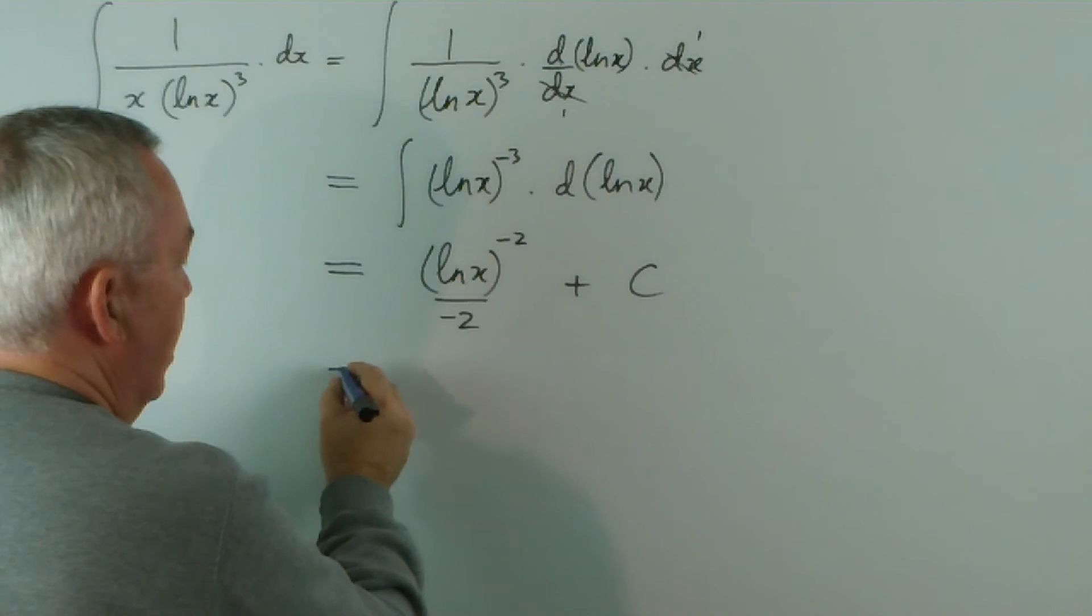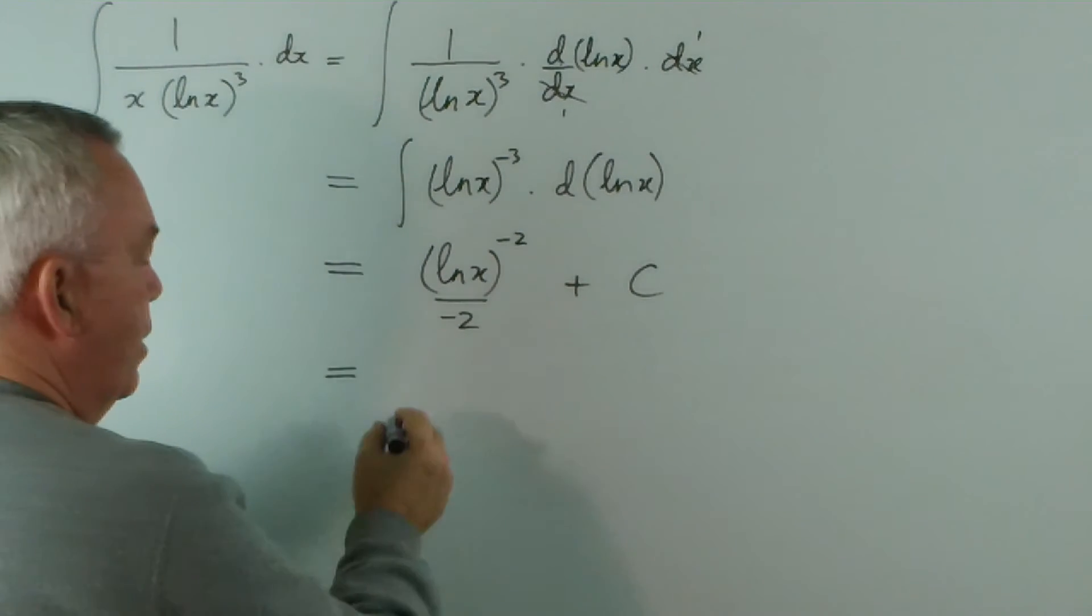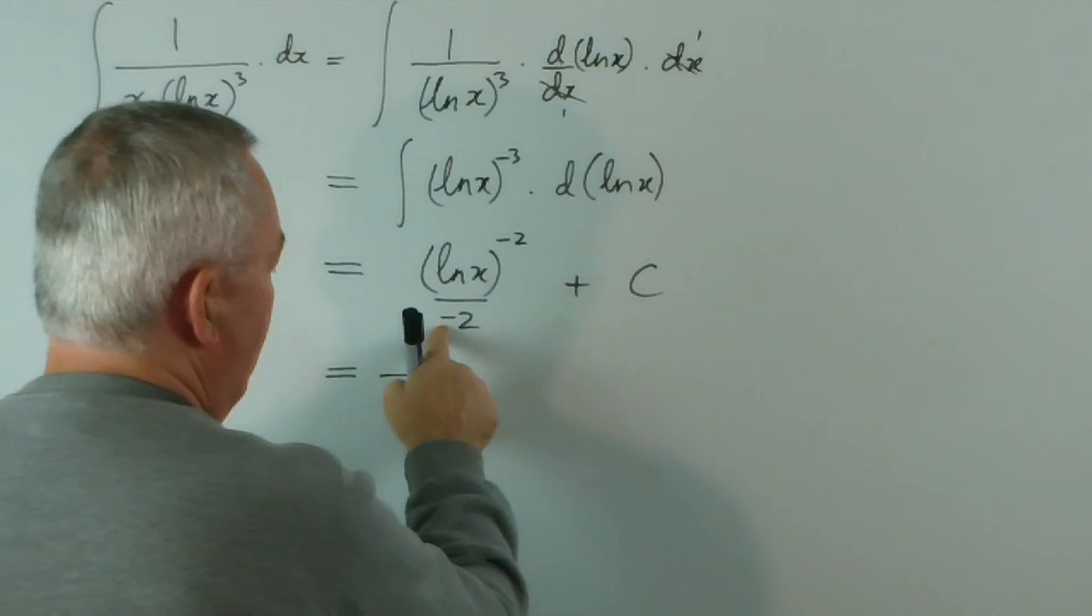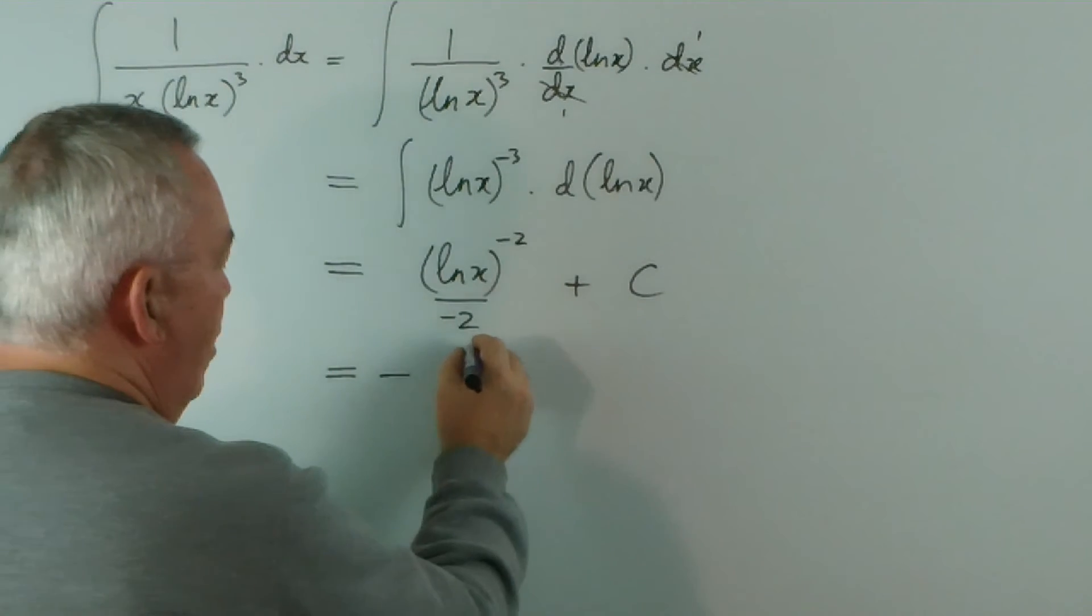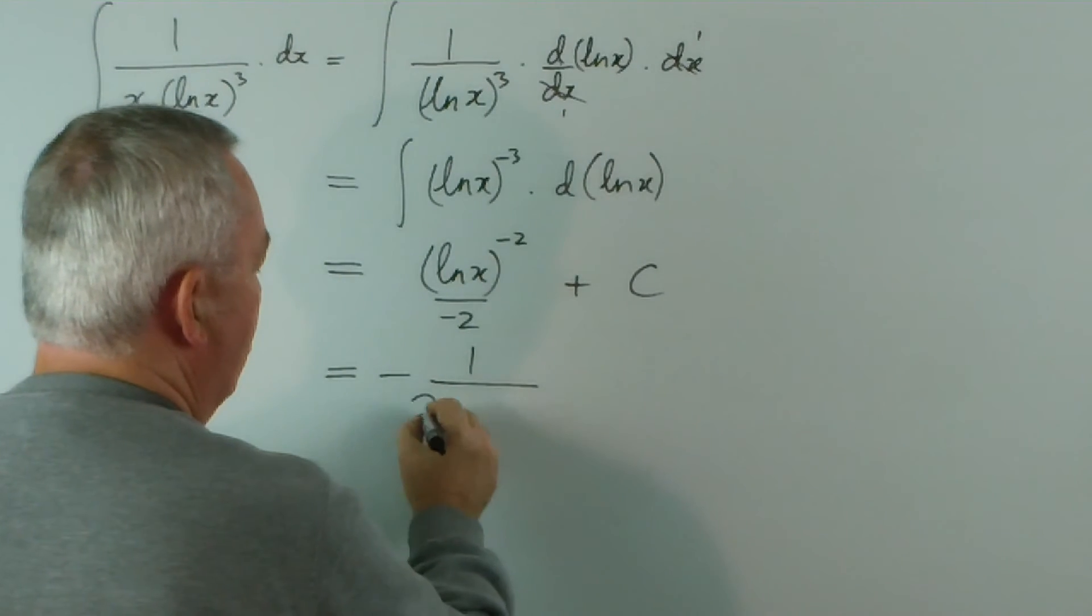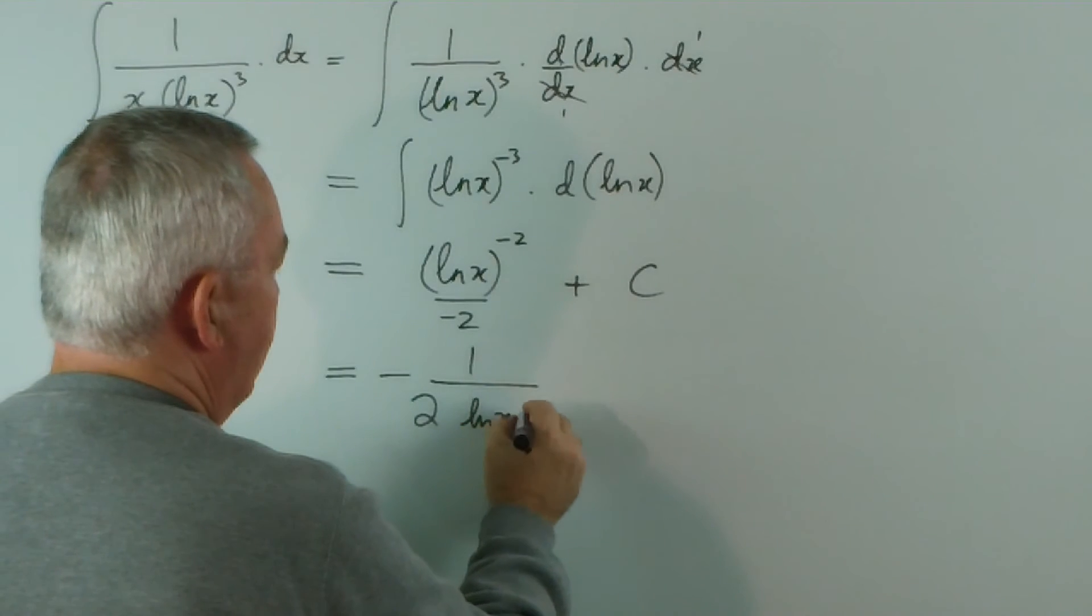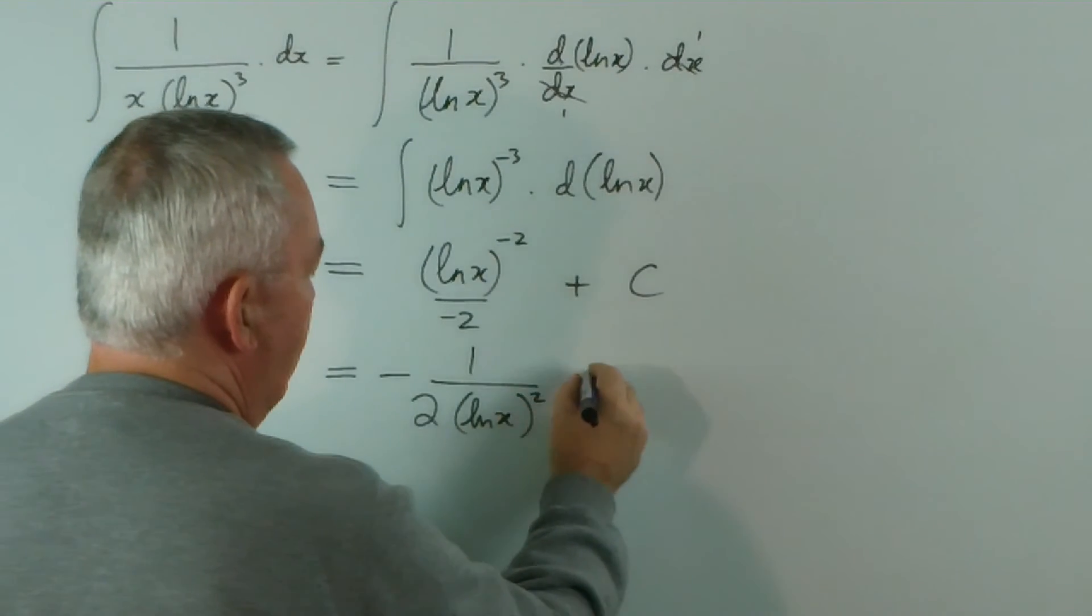So we've completed our integral and all that remains is to write it neatly: negative 1 over 2 log x squared plus c.